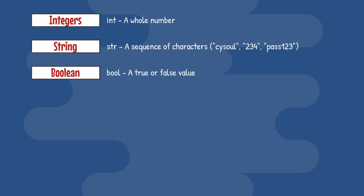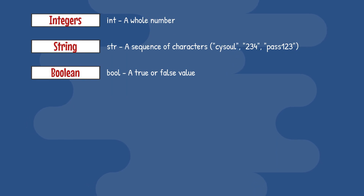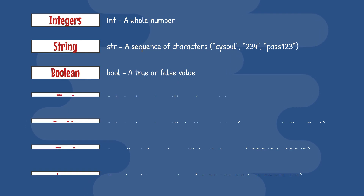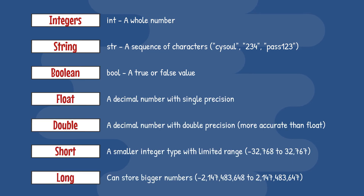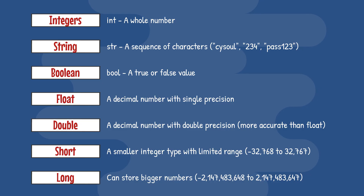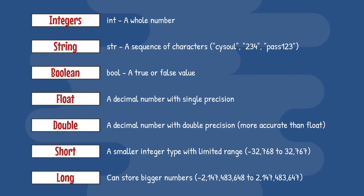So, we already went over integers, strings, and booleans. Now let's talk about some other types. Float, double, short, and long are all different types of numbers. If you need a specific type, a quick internet search will help you determine which one best suits your needs.